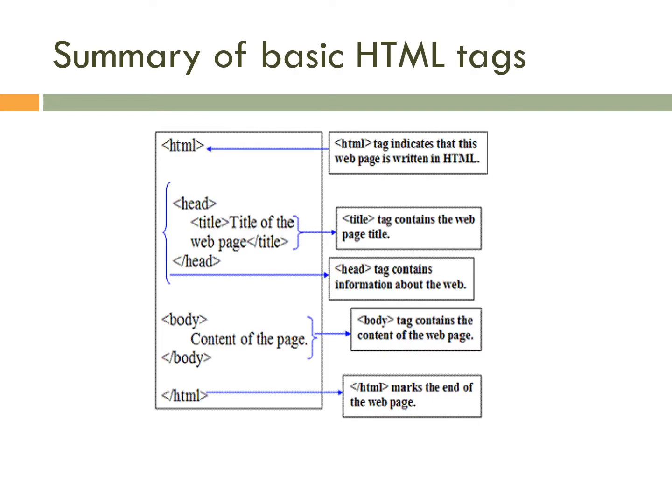Next we will see a summary of basic HTML tags. In the basic structure of HTML there are basically four main tags: first is HTML, second is head, third is title, and fourth is body.